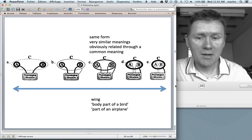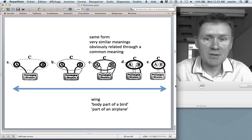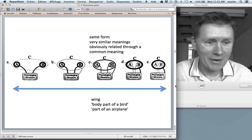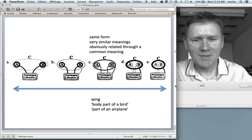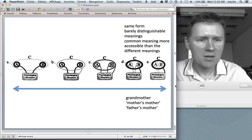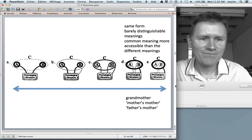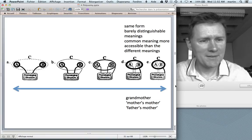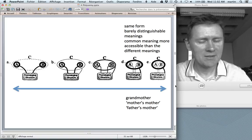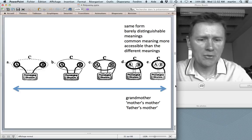We go further along on the continuum and we get things like wing, which can be a body part of a bird or a part of an airplane. And these two meanings are very similar indeed, and they're obviously related through a common meaning. They're both used as a part of things that fly, be they animals or constructed machines. And then towards the far end of the continuum, we have the same form with barely distinguishable meanings, where the common meaning is in fact more accessible than the different meanings. So reporter, I've already mentioned that case. Grandmother can be the mother's mother or the father's mother. Aunt is another case of that. So instead of the clear and crisp categorical distinction that the tests for ambiguity and vagueness suggest, here, we would have a more nuanced picture that says, well, these things fall along a continuum.